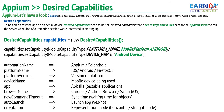At this point, nothing to worry about memorizing each and every capability. You must know there is a class, there is a configuration — something called desired capabilities — and we need to specify these in the Selenium WebDriver such that Appium can read it and understand based on the configurations we specified.